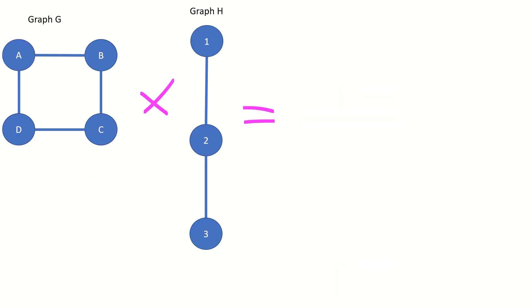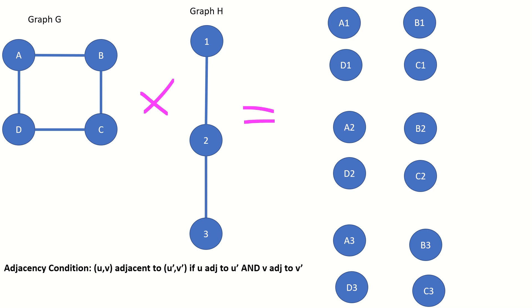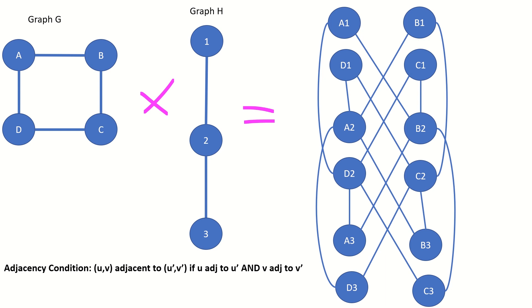Finally, the intuition behind tensor products of graphs — or really any graph product — is that each vertex in one graph copies the entire other graph's vertices, and then adjacencies between those vertices are created according to specific adjacency conditions. It is those adjacency conditions that separate tensor products from Cartesian products and from other types of graph products. Interestingly, there are actually 256 different graph products that can be defined where the vertex set of the product is the Cartesian product of the factor graph's vertex sets, and the adjacency conditions are some combination of pairs from six specific statements.